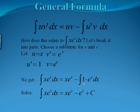So our original integral equals x·eˣ — that's our first term — minus the antiderivative of eˣ, which is eˣ. Since we don't have bounds, we still have our plus C. So now we can see what the original function is, and when we take the derivative, we should get back what was in the integral.